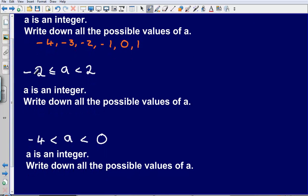Okay, next one. We've got minus 2, and then we've got a is greater than or equal to minus 2, but smaller than 2. So what numbers could it be? It could be minus 2, could be minus 1, could be 0, could be 1. It can't be 2, because we're told that it has to be less than 2.